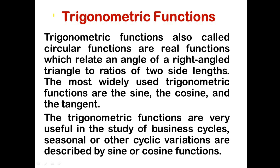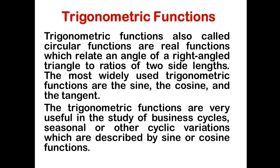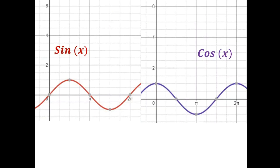Trigonometric functions, also called circular functions, are real functions which relate an angle of a right-angle triangle to ratios of two side lengths. The most widely used are the sine, cosine, and tangent functions. In economics, trigonometric functions are very useful in the study of business cycles, seasonal or other cyclic variations, which are described by sine or cosine functions. On plotting the sine and cosine functions on a coordinate plane, we get curves which are wave-like movements.